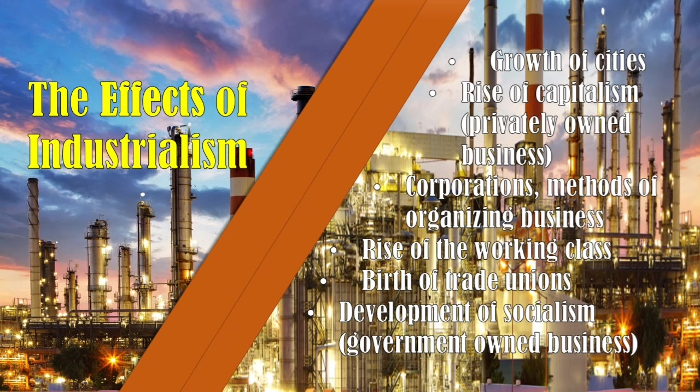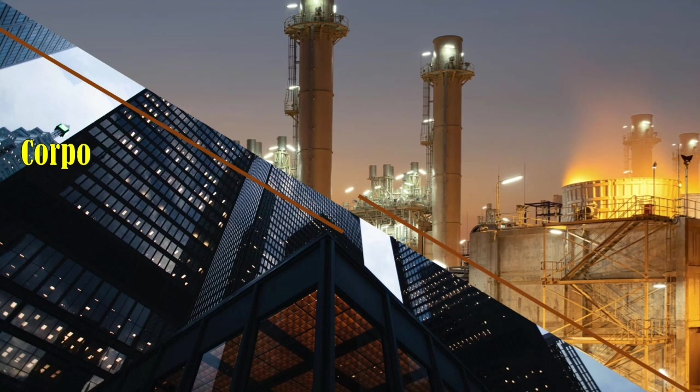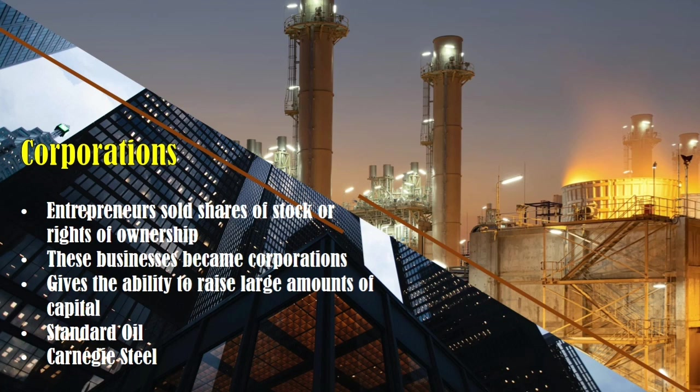Also, there was the development of socialism, where the government owns businesses. As entrepreneurs sold shares of stock, businesses became corporations, giving them the ability to raise large amounts of capital. Famous for this is the Standard Oil Company controlled by John Rockefeller from 1870 to 1911, which controlled almost all oil production, processing, marketing, and transportation in the United States. Another is Carnegie Steel, a steel-producing company created by Andrew Carnegie during the late 19th century.